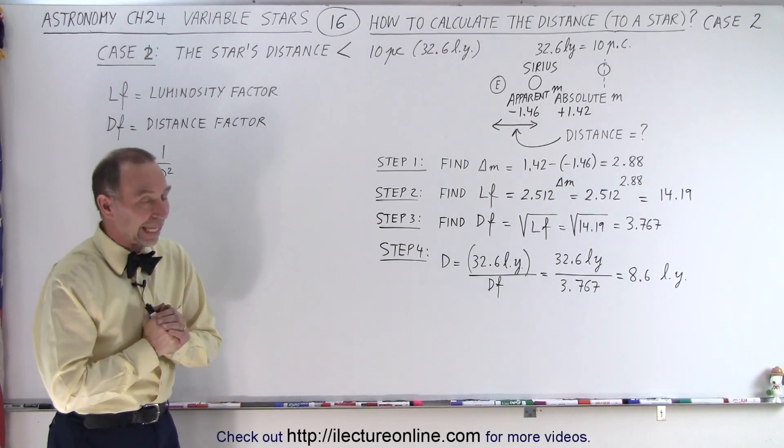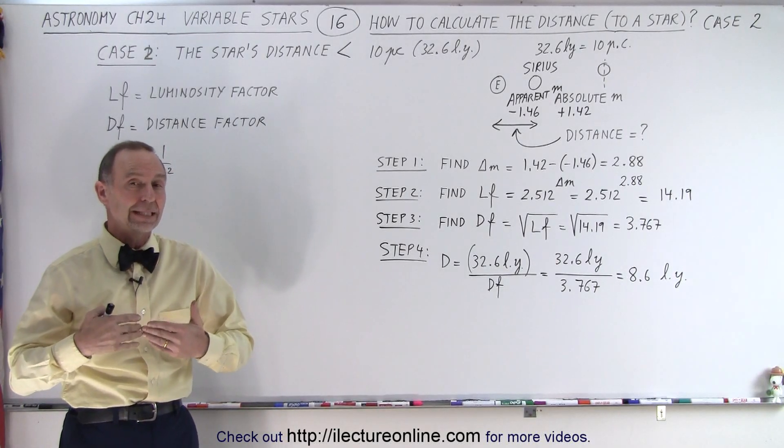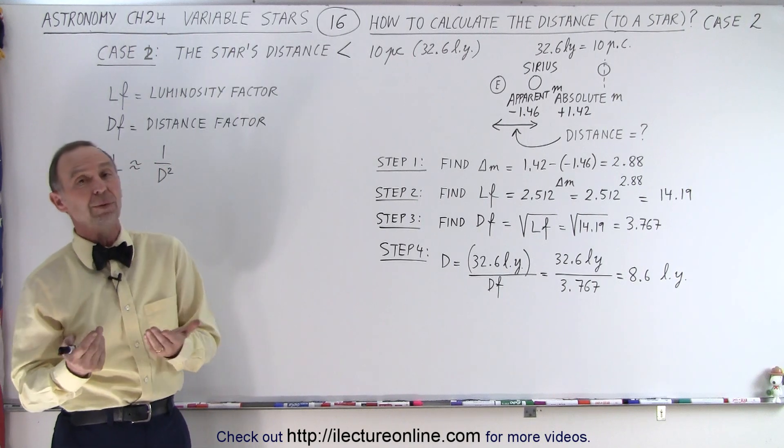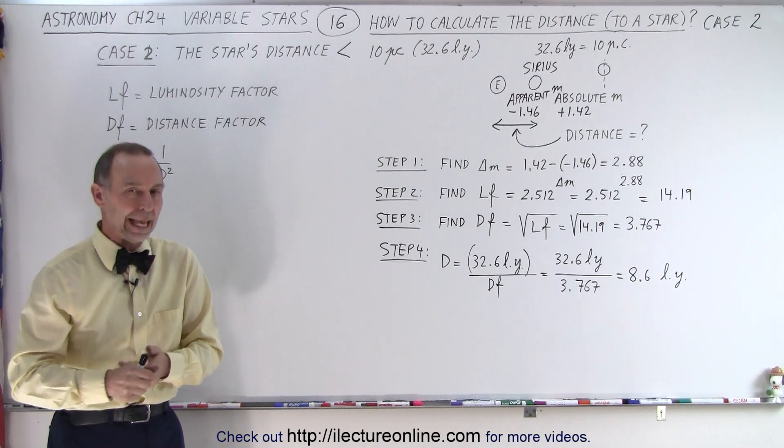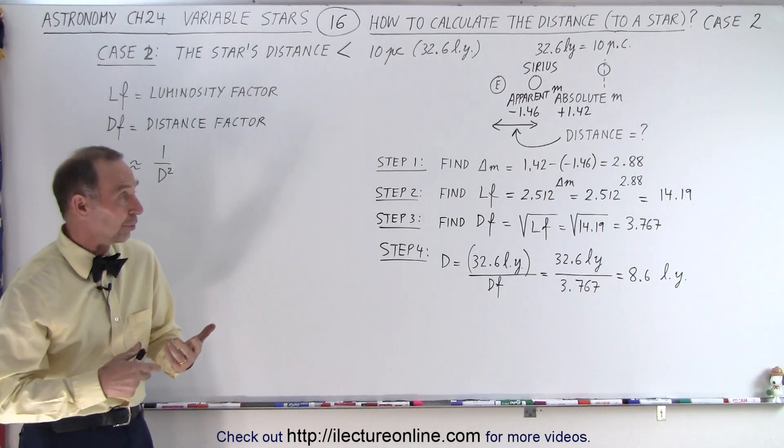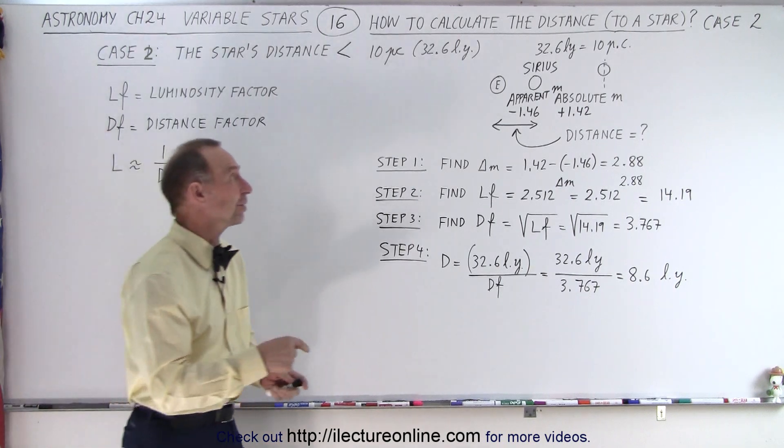Welcome to ElectronLine. Here again we're going to try to calculate the distance to a star, presuming we know the absolute magnitude and the apparent magnitude, and we're going to use a well-known star, in this case Sirius.